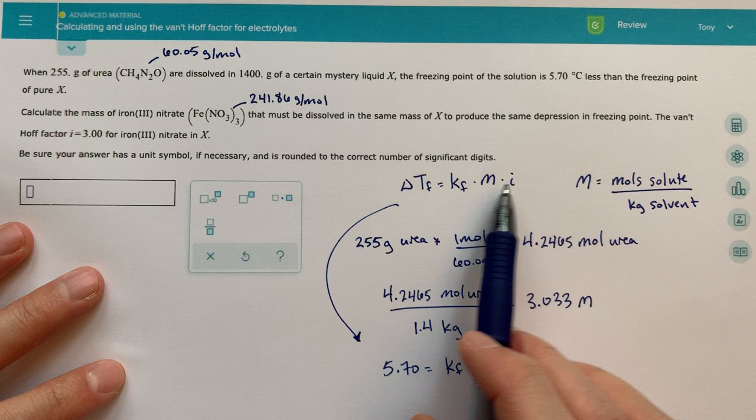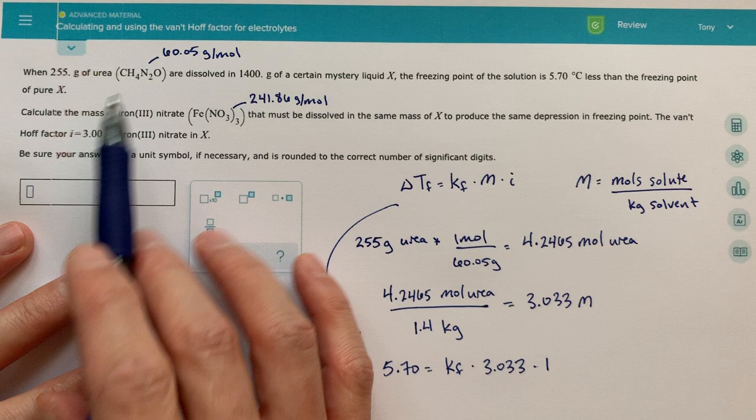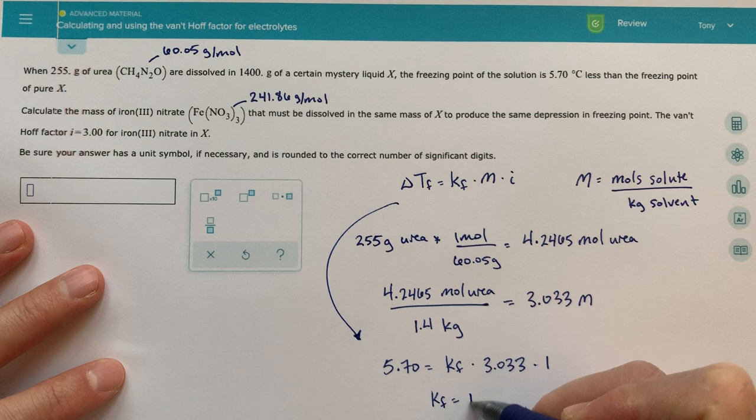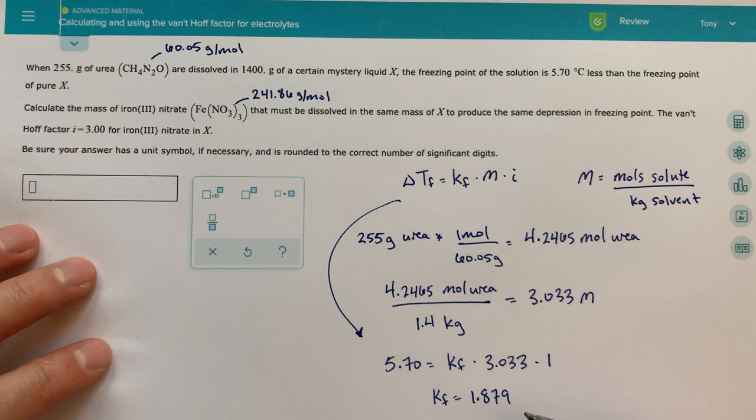Our molality is 3.033, and then our van't Hoff factor for this urea, again, this is a molecular compound. These are all nonmetals. Therefore, our van't Hoff factor is going to be 1. And then that will allow us to solve for our KF. So if we solve for KF, our KF for this mystery liquid is equal to 1.879.